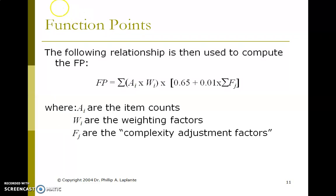The function point formula is FP equals sum of (Ai times Wi) times [0.65 plus 0.01 times sum of Fj]. Here, Ai are the item counts, Wi are the weighting factors, and Fj are the complexity adjustment factors. Based on this, you calculate by getting the values of Ai, Wi, and Fj, then calculate the function point.